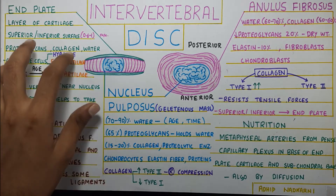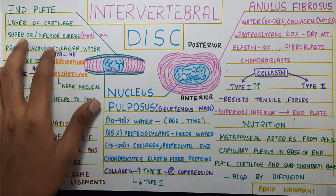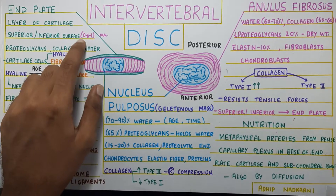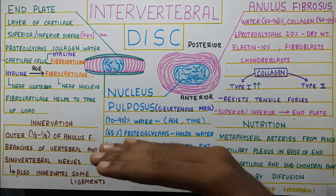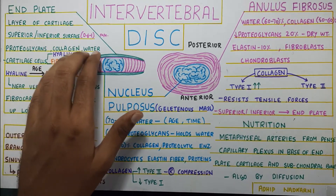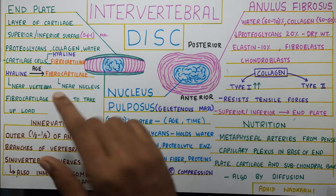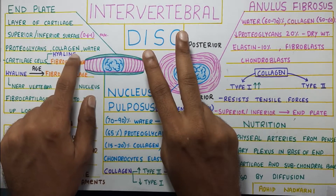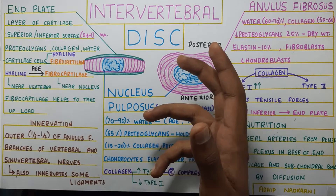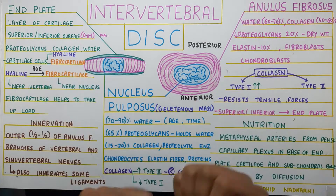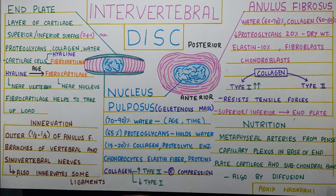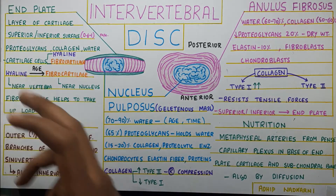The end plate is essentially a layer of cartilage on the superior and inferior surfaces of the disc, 0.6 to 1 mm thick, present between the bone and the disc. It contains proteoglycans, collagen, and water, but more importantly it has cartilage cells of two types: hyaline cartilage and fibrocartilage. With age, hyaline cartilage gets converted into fibrocartilage because fibrocartilage is very helpful in absorbing forces. As your age increases, your force absorption strategies need to be enhanced.